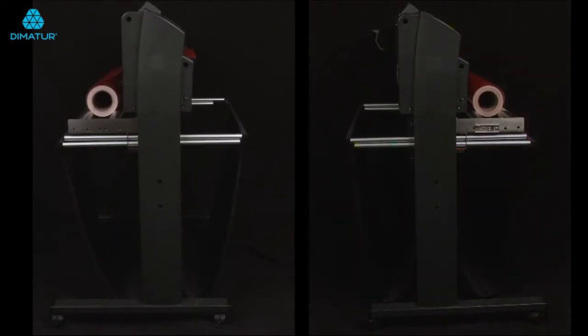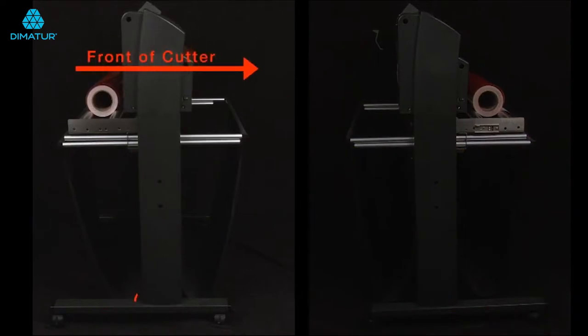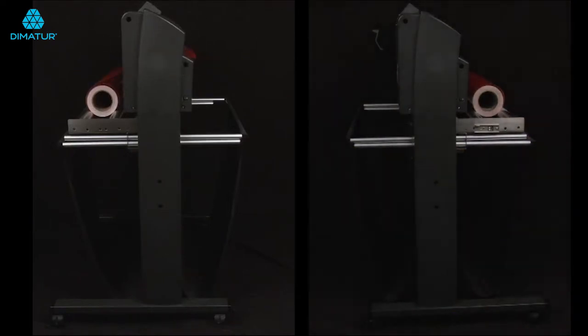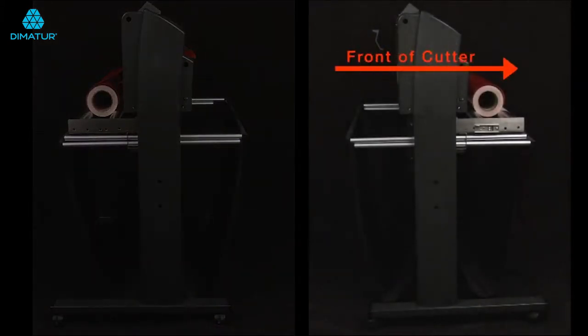If you plan to have the media roller in the back, place the front of the cutter facing toward the shorter end of the footer. Conversely, if you plan to have the media roll in the front, set the front of the cutter so it is facing the same direction as the longer ends of the footers.